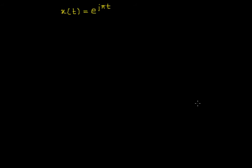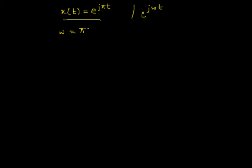Welcome to the video lecture on the examples of periodic and aperiodic signals. In this example, we'll consider a continuous time signal X(t) which is equal to e to the power jπt. The task is to determine: is this signal periodic or not, and if periodic, what is the fundamental period? We can compare e to the power jπt with the standard signal e to the power jωt, so we can write ω equals π.